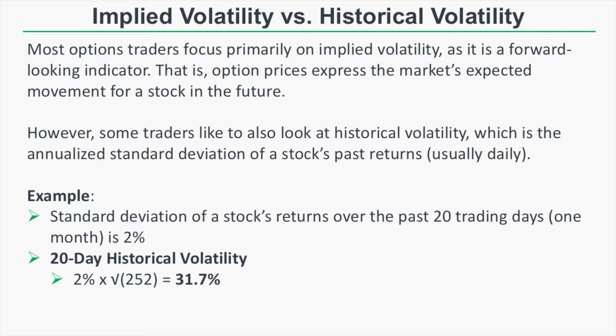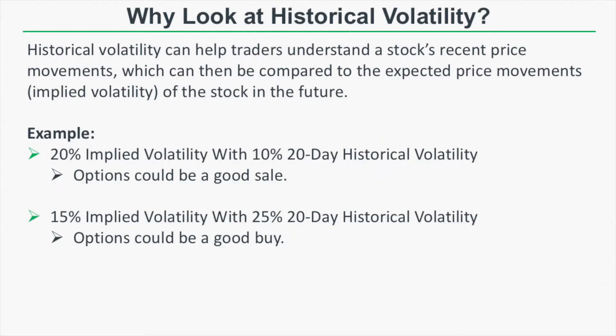That number doesn't tell us a lot in itself, so we have to compare it to implied volatility to see if option prices are currently more or less expensive compared to the stock's recent price movements. For example, let's say we have a stock trading with 20% implied volatility, and that stock's recent price movements have generated a 20-day historical volatility of 10%. The options are implying a 20% move over the next year.